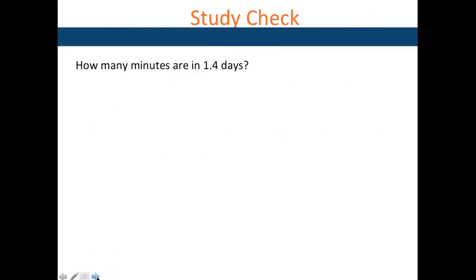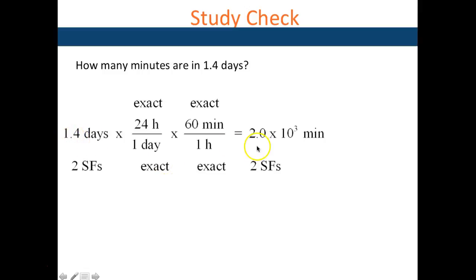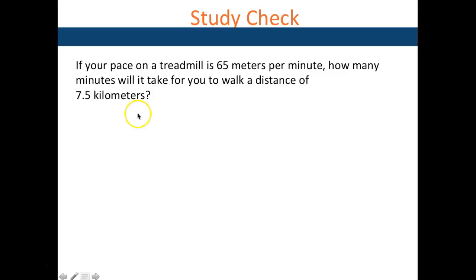How many minutes are in 1.4 days? One day equals 24 hours, one hour equals 60 minutes. Days cancel, hours cancel, and you get the answer in minutes. Since these are all in the same metric system they are all exact, so the significant figures come from the measured number — two sig figs — giving two sig figs in the final answer.